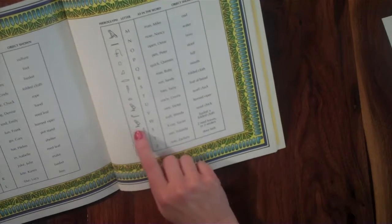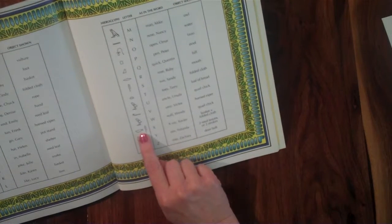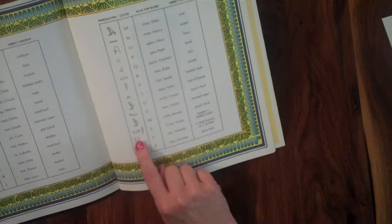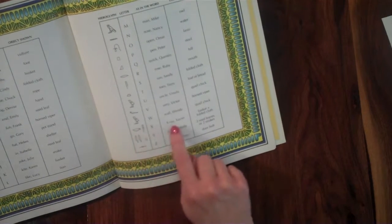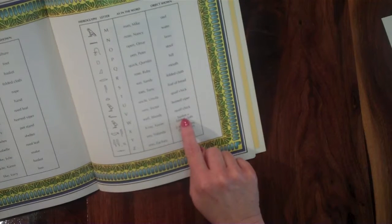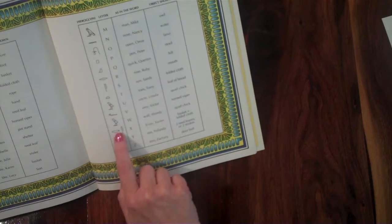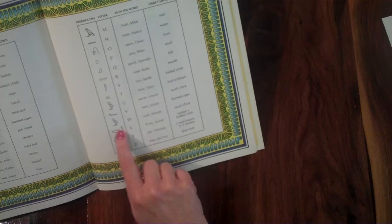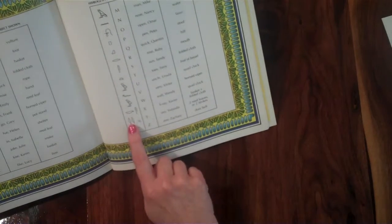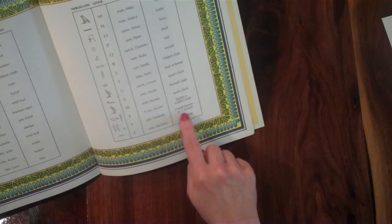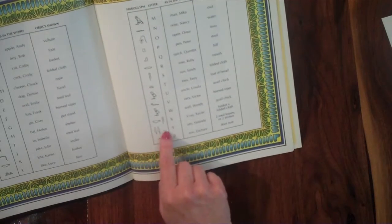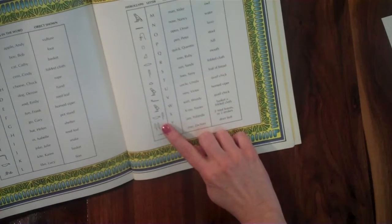Also notice on the hieroglyph here for X and Y there are multiple pictures. So for X it says as an x-ray, the basket plus the folded cloth. In that case you would have to use both of them. But here for the Y it says two reed leaves or two strokes, so you don't have to use all four. You would just use the two reed leaves or the two strokes.